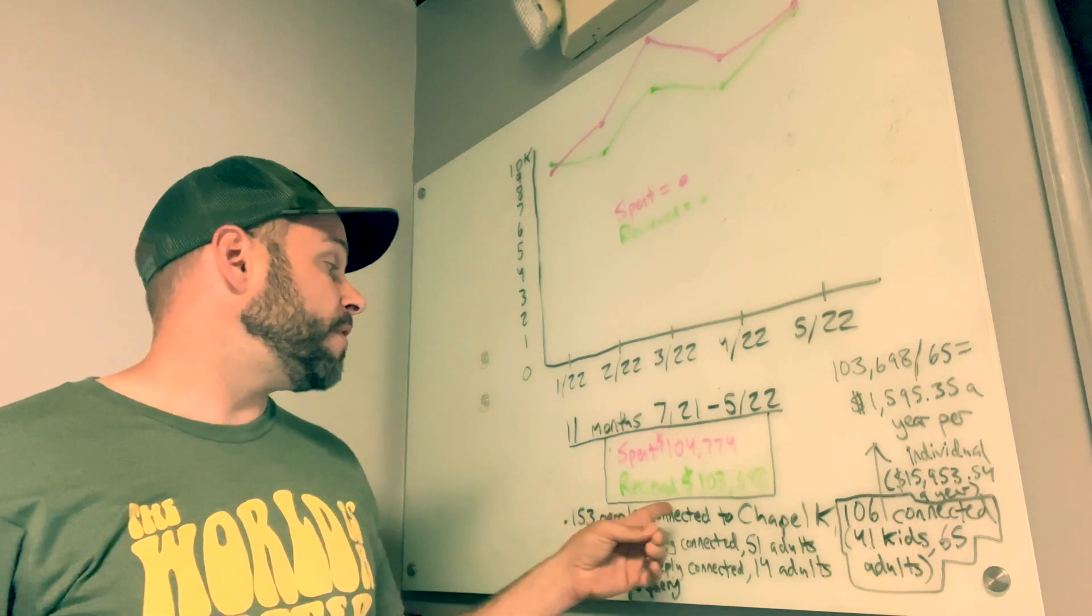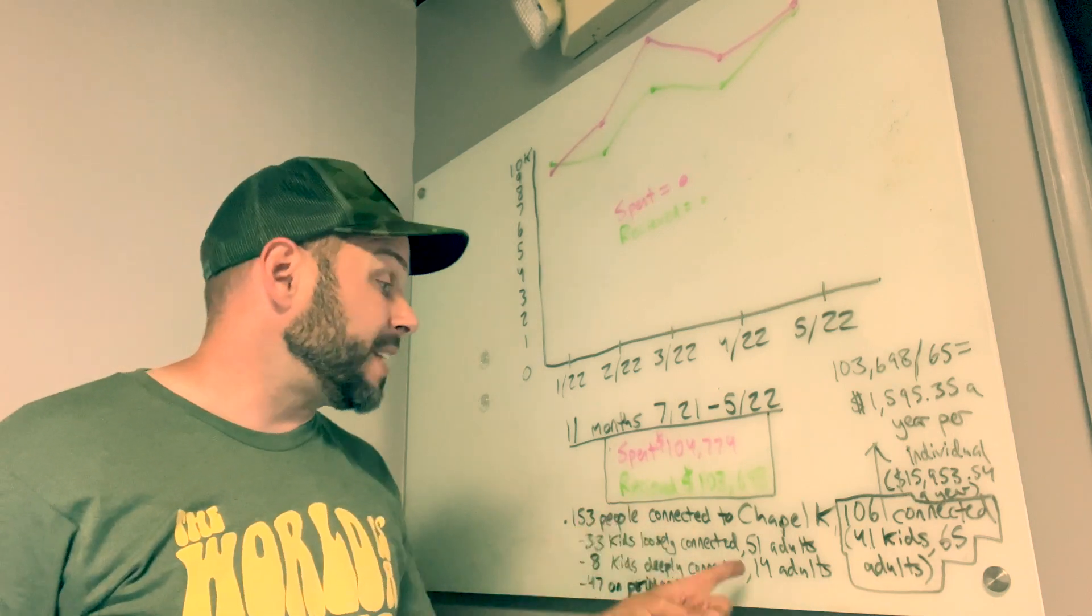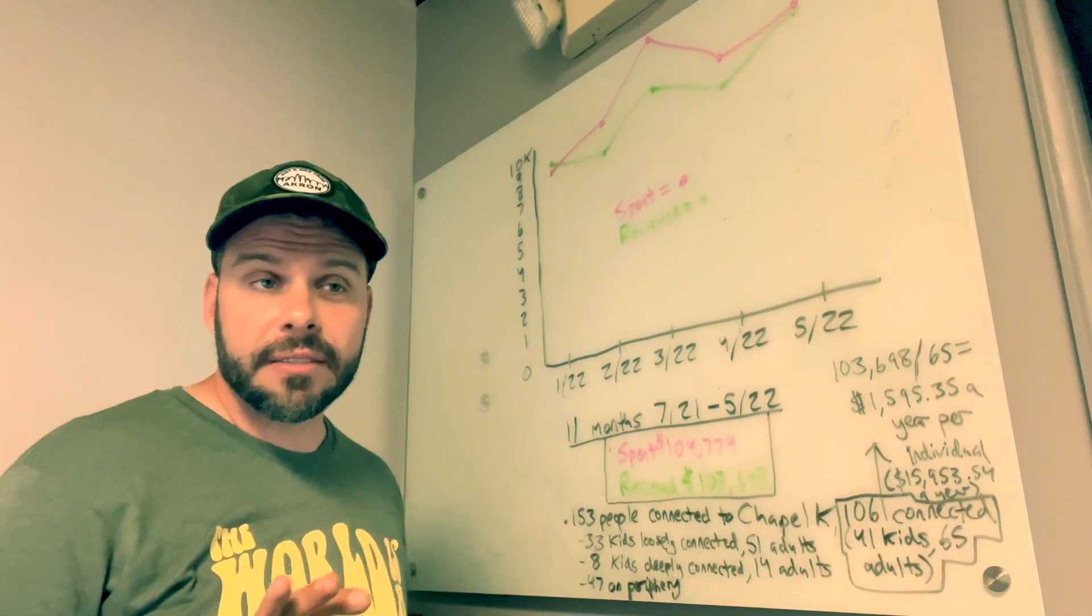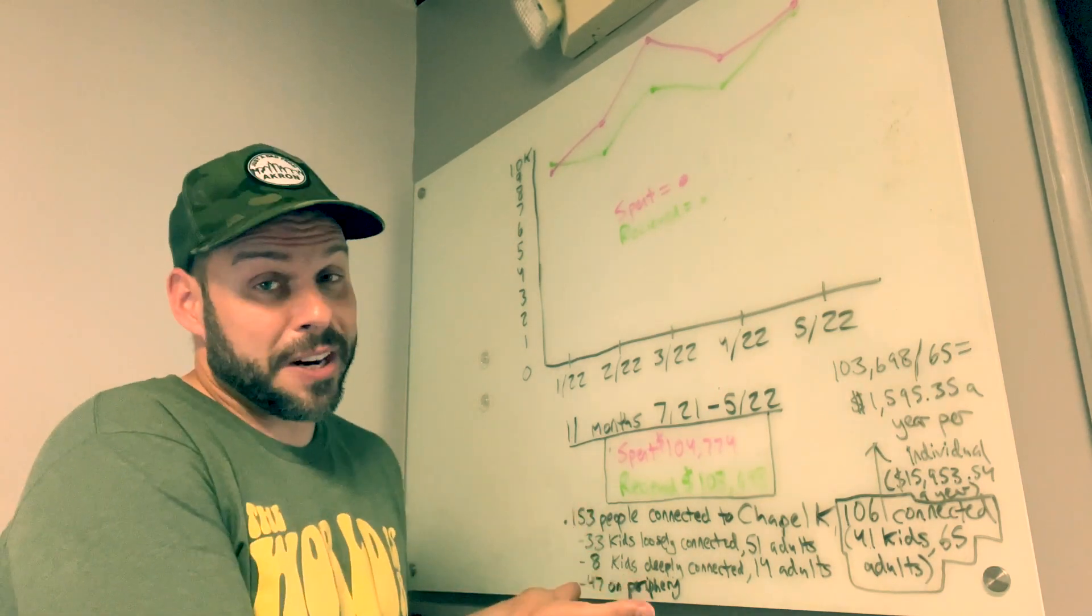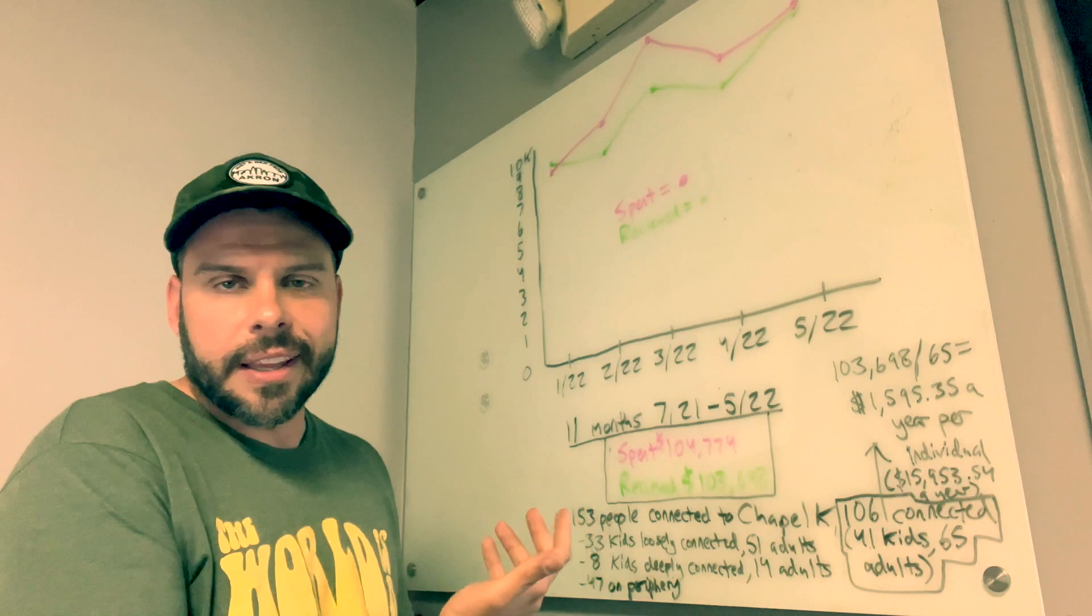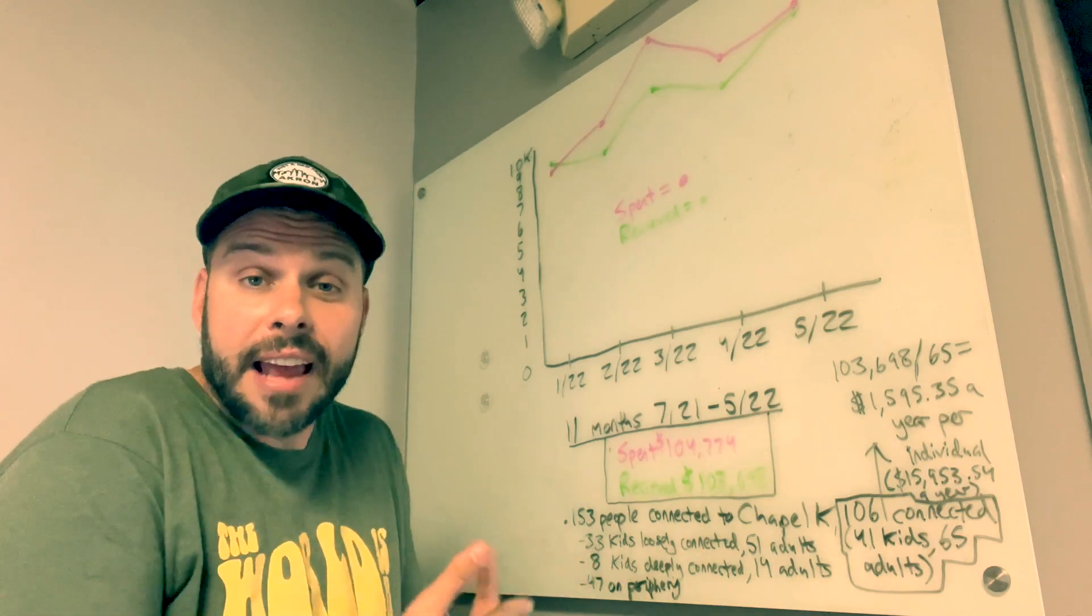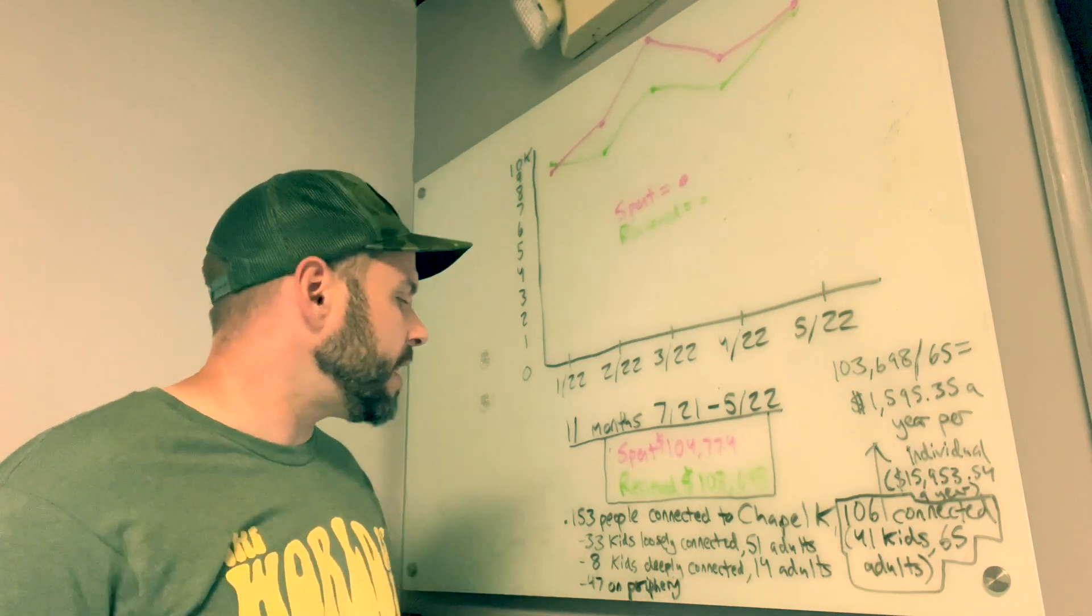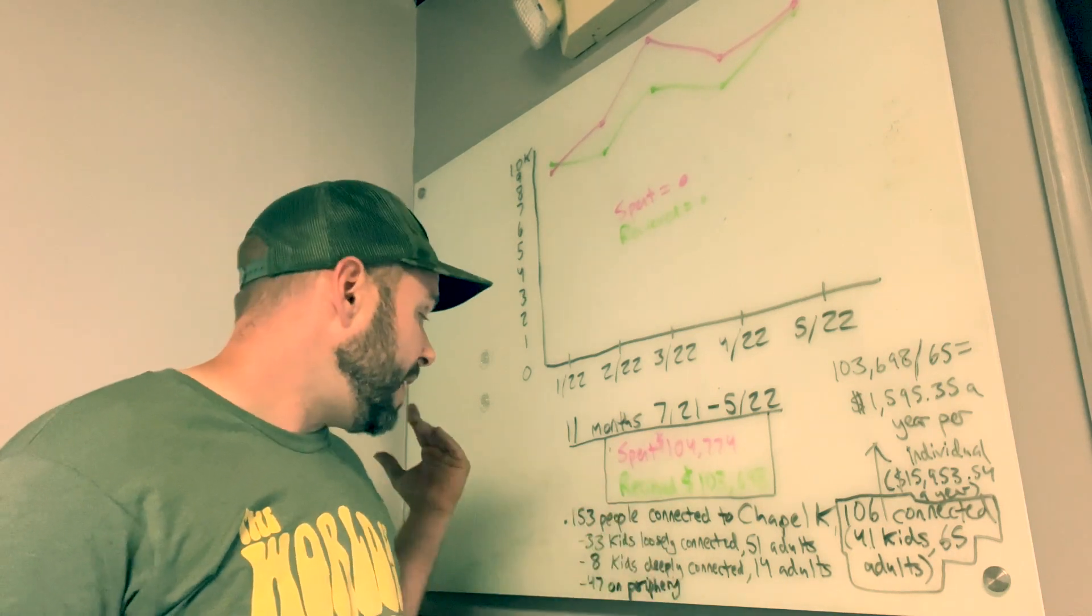Out of the 153 people that are connected to Chapel Kenmore, we have eight kids that are deeply connected and we have 14 adults that are deeply connected. What deeply connected means is they come to everything. The only time they don't show up on a Sunday is because they're out of town or they're sick. This is the ideal here, really. It's definitely how my wife and I, Sarah and I live our lives. Like we genuinely live this way in connection to the church since we've been believers. We have about 22, 23 people that are deeply connected.